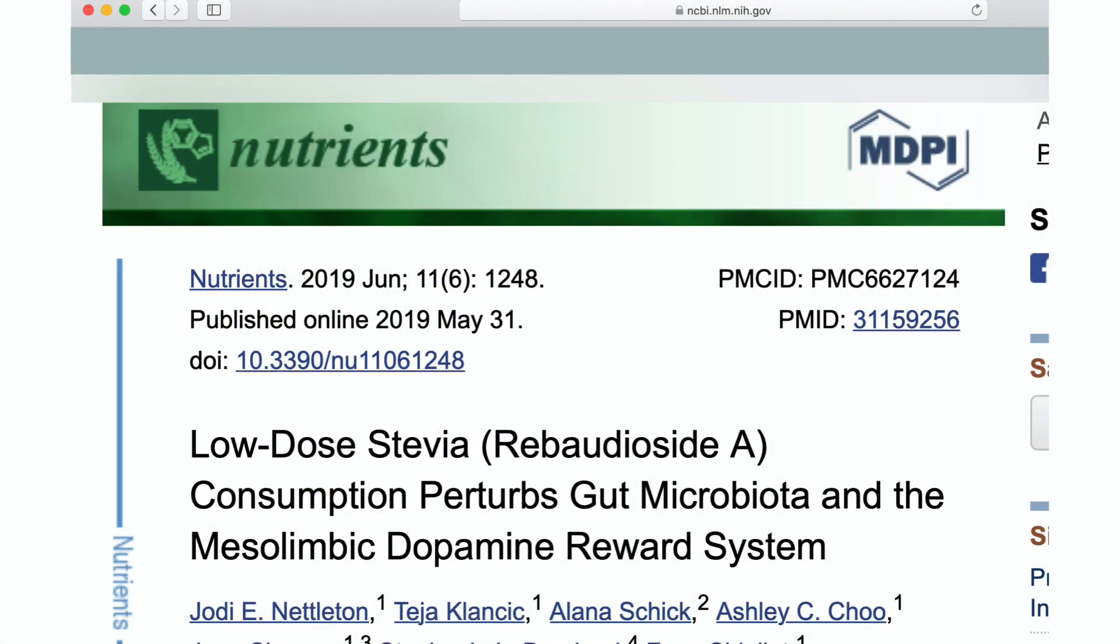Here's a study that looks at low-dose stevia consumption. They found out that it perturbs or causes trouble to gut microbiota in the mesolimbic dopamine reward system. What on earth is going on here? Well, let's try to break this down a little bit. So, in our gut, now I have a whole seminar that I do called the Gut-Brain Connection, where we go like five, six hours of material on research on the Gut-Brain Connection.